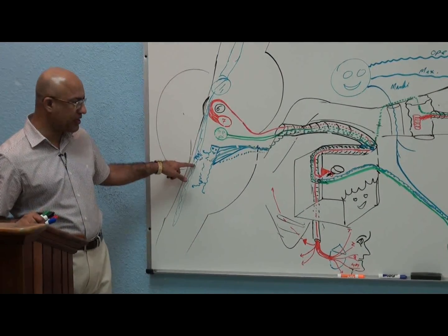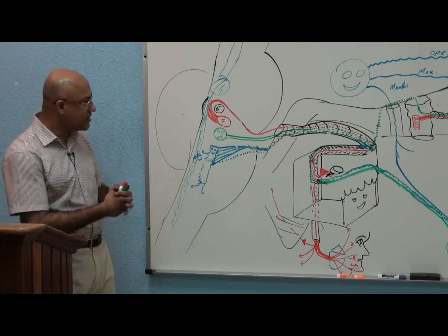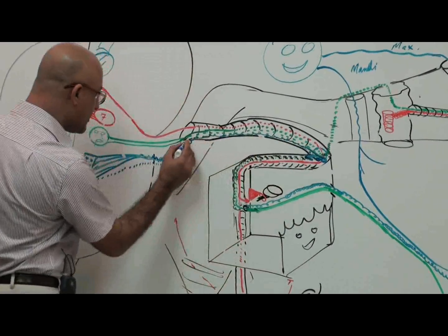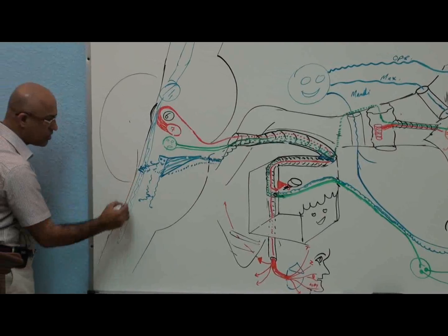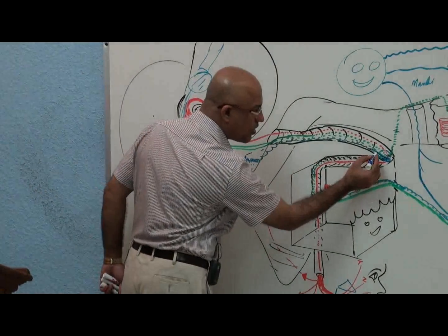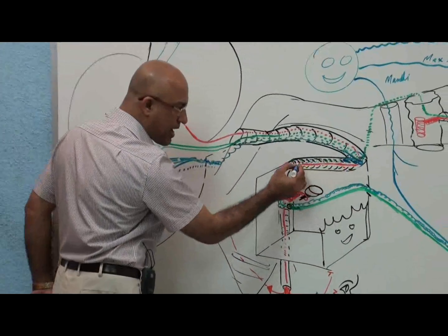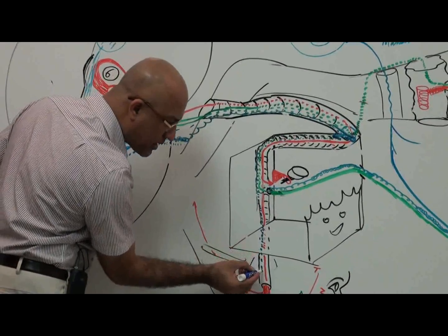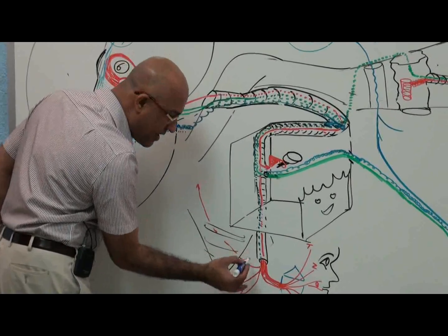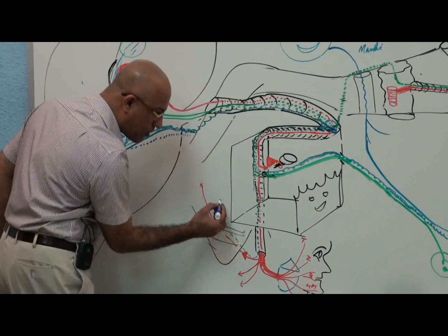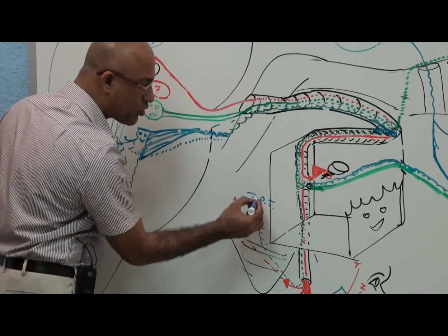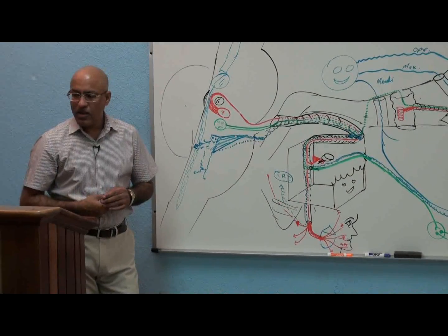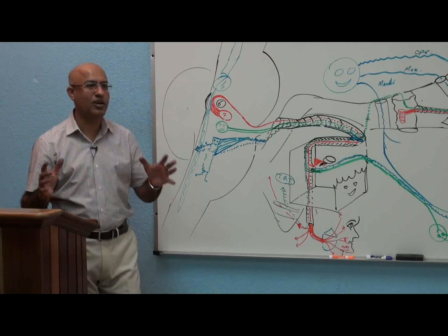Touch, pain, and temperature fibers from the external ear have their cell bodies in the geniculate ganglion. Their central processes connect with the spinal nucleus of the trigeminal system, and the peripheral processes move with the facial nerve proper into the facial canal — backward and then downward. These touch, pain, and temperature fibers keep going down and exit through the stylomastoid foramen, going to the posterior auricular branch, which gives somatic sensation to the posterior part of the external ear.